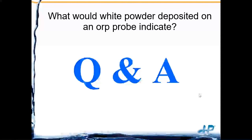Question: what would white powder deposited on an ORP probe indicate? Need more information on where the white powder is. If you take the wet boot off a combination electrode and see white powder on the probe body, that's most likely the internal KCl salt solution that has dried out and crystallized.